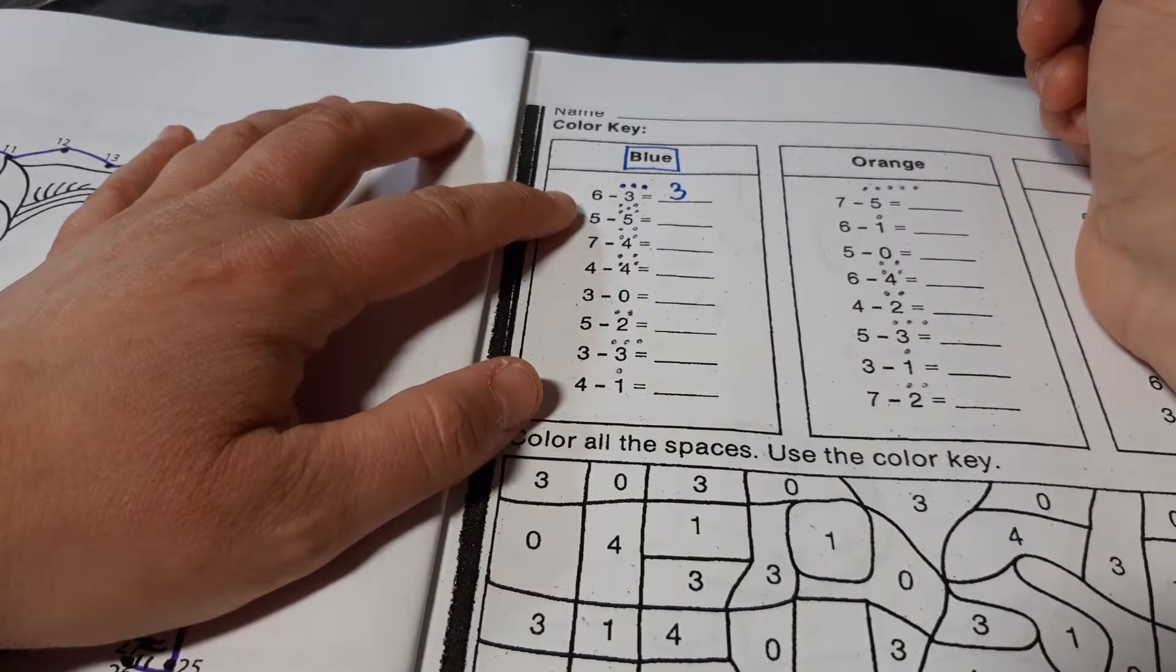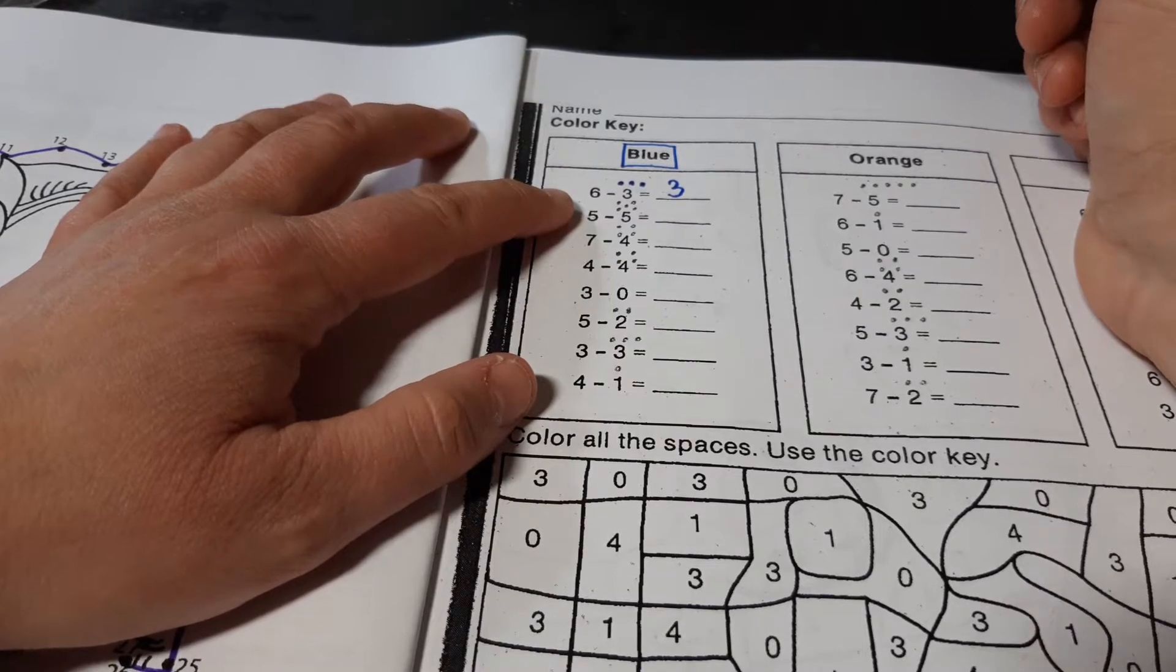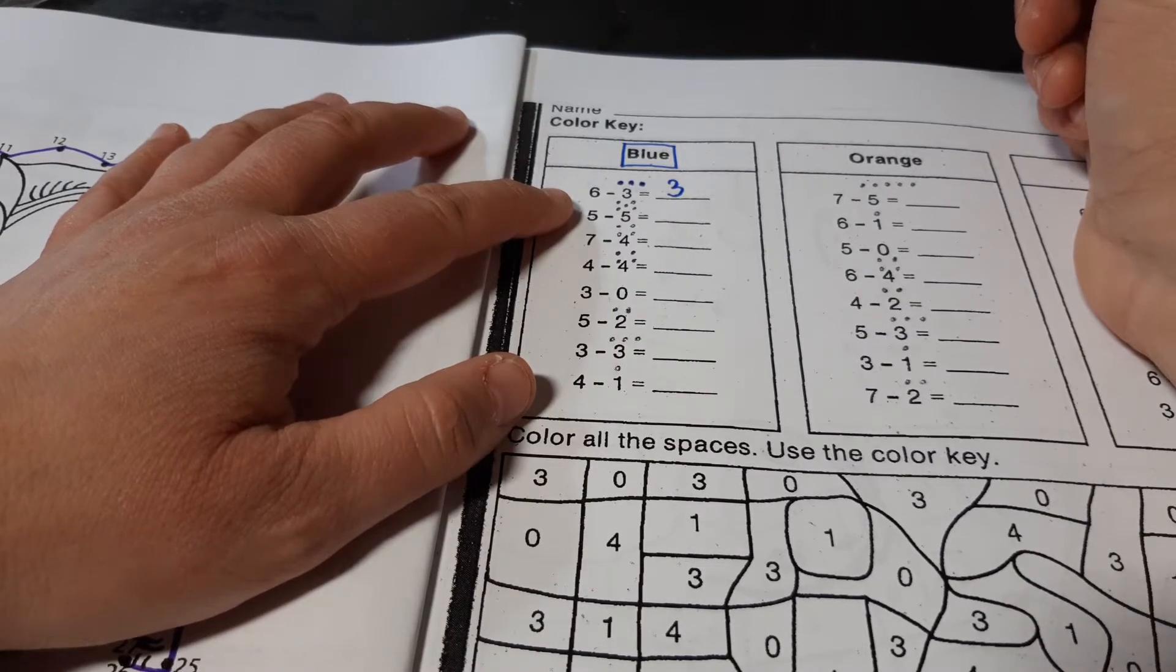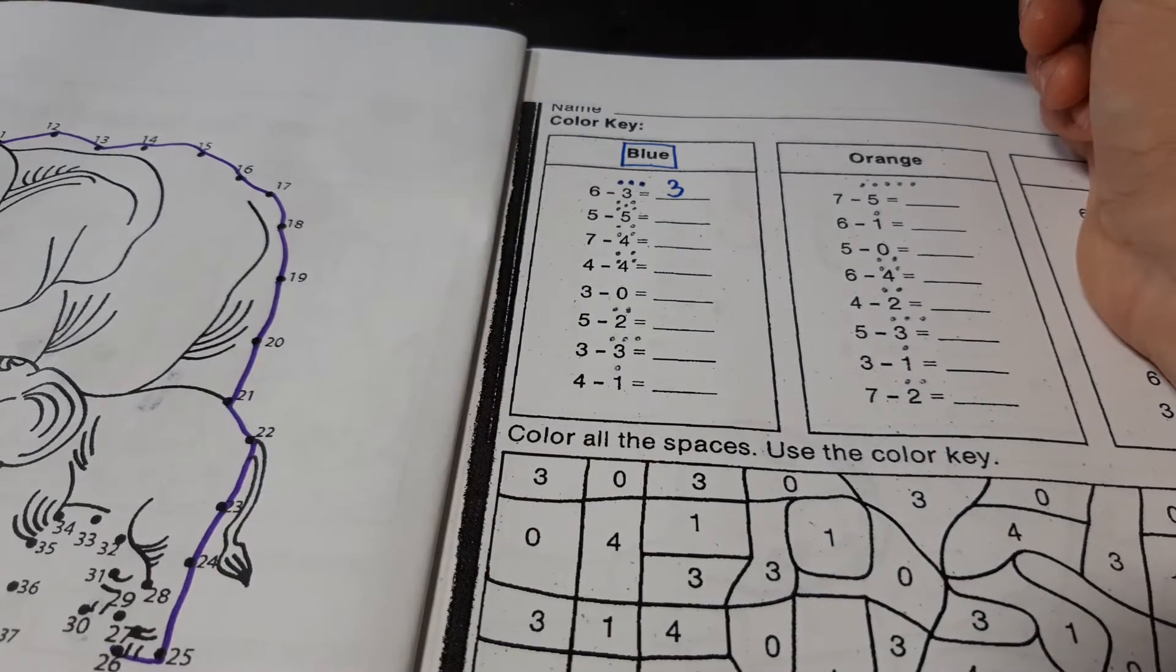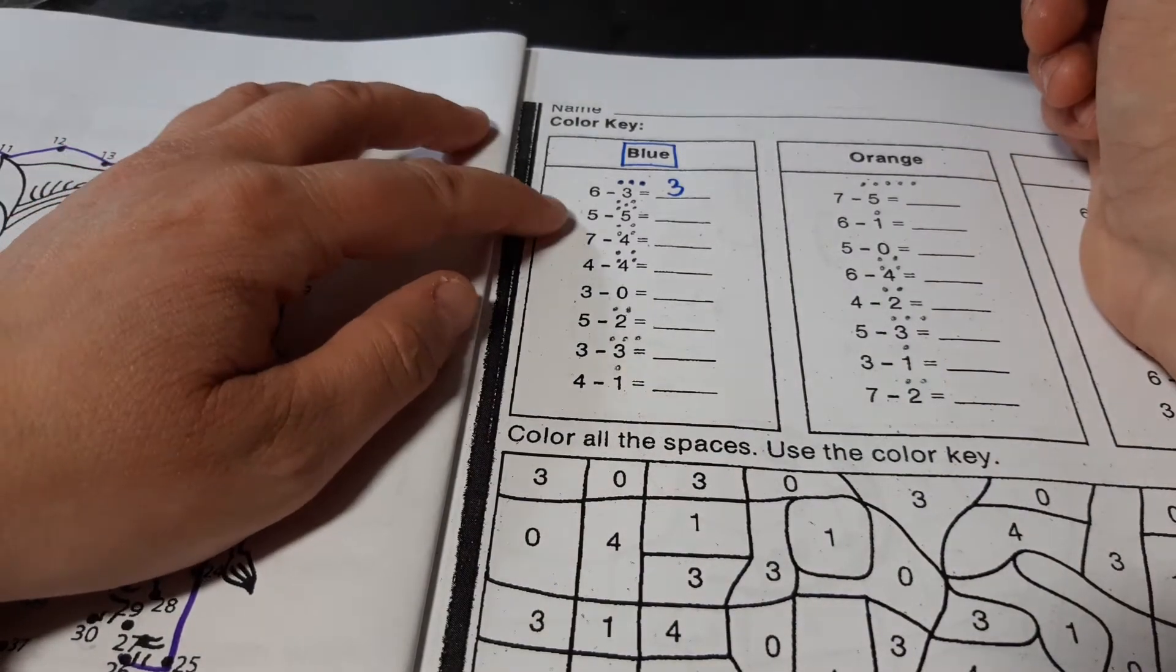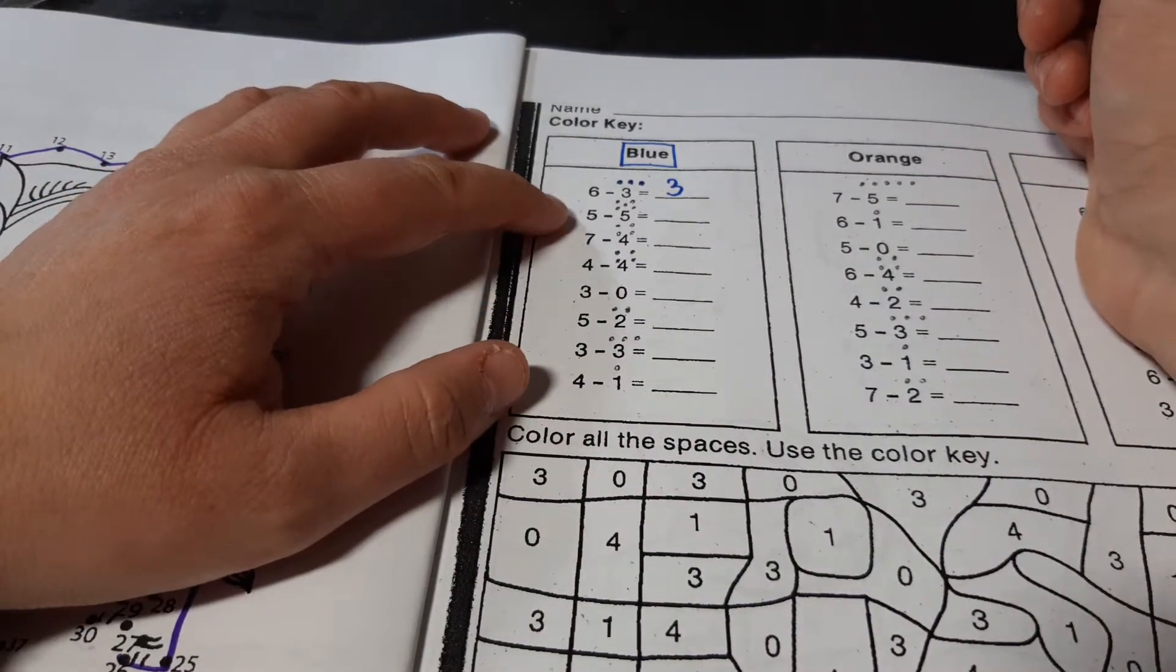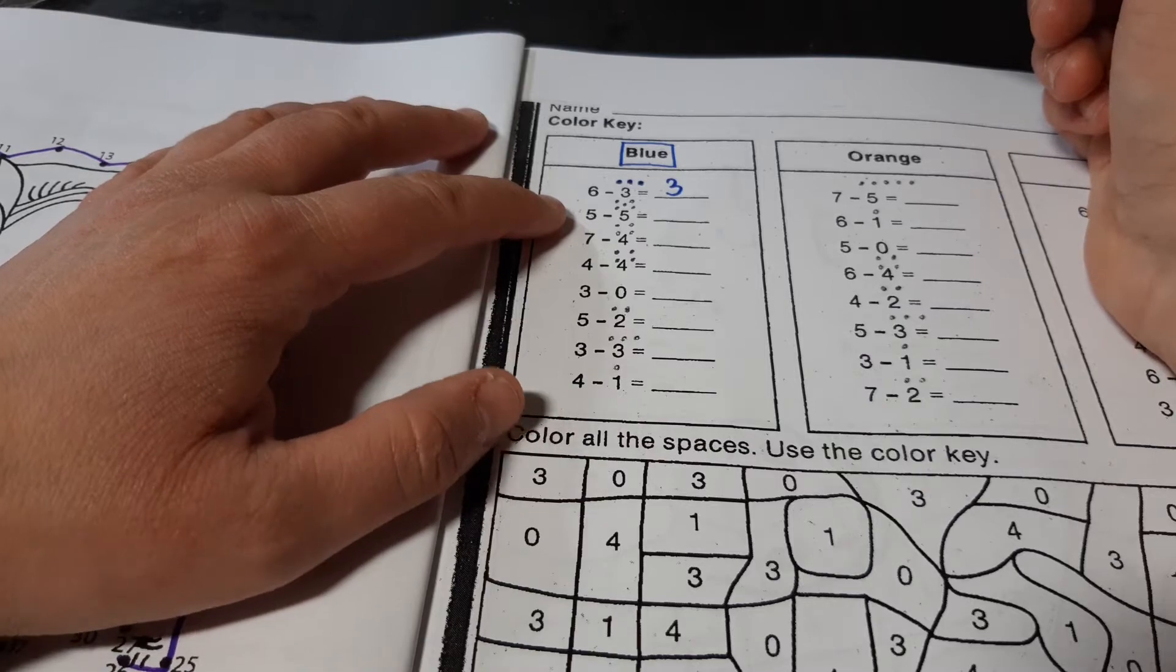Okay, now I'm using dots to help you see how I'm counting backwards, but if you want, you can use your fingers, or you can use a number line, or even make your own dots on your paper if you would like.